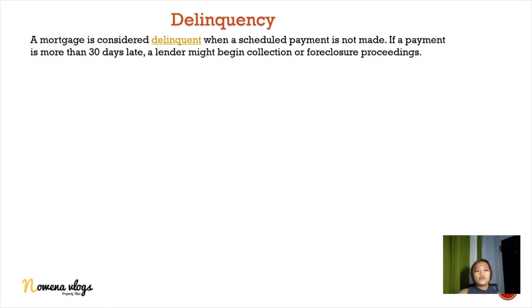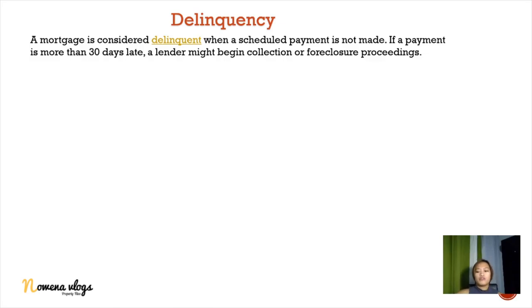Delinquency — a mortgage is considered delinquent when a scheduled payment is not made. If a payment is more than 30 days late, a lender might begin collection or foreclosure proceedings. In simple terms, delinquency means you are late on your payment, and the financing institution will charge you interest for 30 days or more of delay.